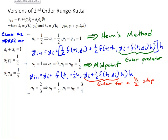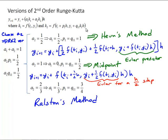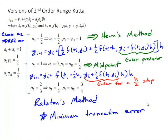The last common version is to take a2 equal to two-thirds, a1 equal to one-third, which results in p1 and q11 equal to three-fourths. This is called Ralston's method. All of these versions are second-order accurate and have second-order truncation errors, but Ralston's method can be shown through analysis to give the minimum truncation error.